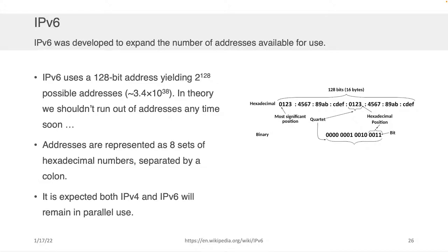IPv6 yields 2 to the 128 possible addresses, which is 3.4 times 10 to the 38 — not something we'll have to worry about running out of anytime soon. The primary difference is that it uses hexadecimal. In IPv6, you have four hex digits followed by a colon, followed by four more digits, and so on — compared to IPv4's numbers separated by dots.